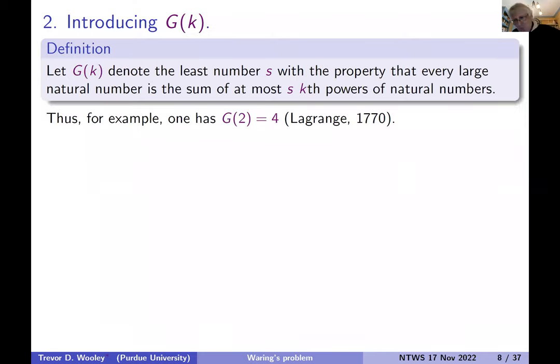So let's study the serious problem, which is big G of k. And here we seek to represent all the large positive integers as sums of at most s k-th powers. And we'd like to make s as small as possible. That's what this big G of k is traditionally used to denote. So Lagrange's theorem is showing that big G of two is four.